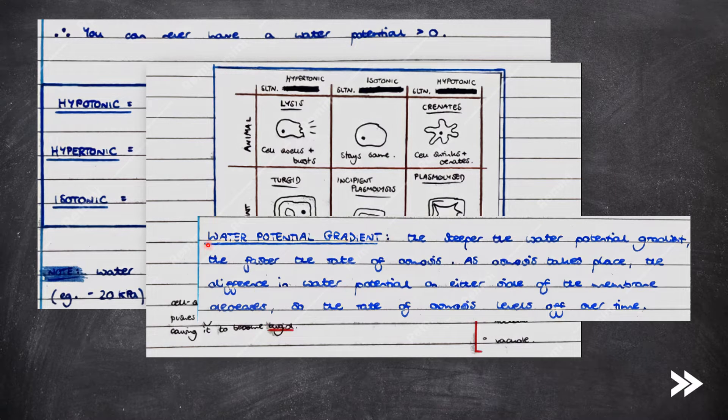We need to consider water potential gradient as well, which is basically the same effect as concentration gradient. The steeper the water potential gradient, the faster the rate of osmosis. As osmosis takes place, the difference in water potential on either side of the membrane decreases, so the rate of osmosis levels off over time.